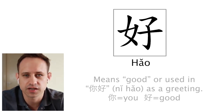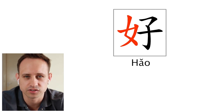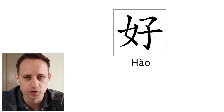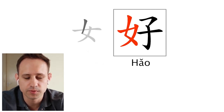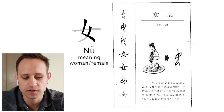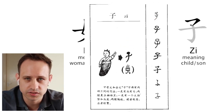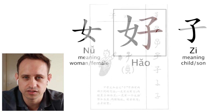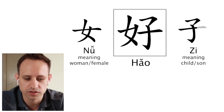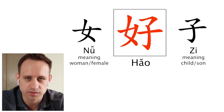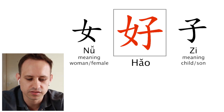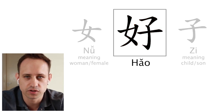The character on the left has the radical for woman. Chinese is made up of radicals — they are like building blocks to the characters. On the left you can see the woman, which looks like a kneeling woman. On the right is the character for child. You put these two together and it means good. The idea is that a mother and child together is good — kind of like the concept of family, and this is quite a beautiful meaning.